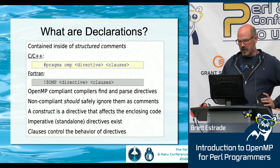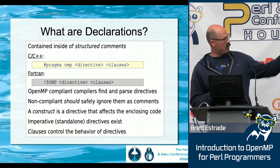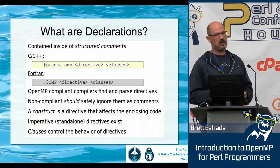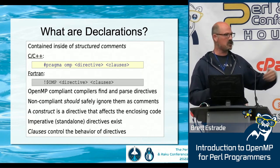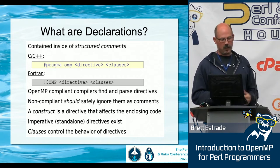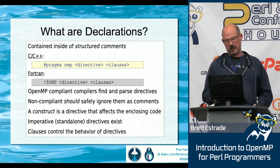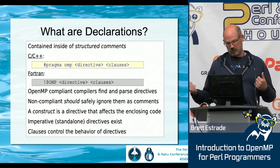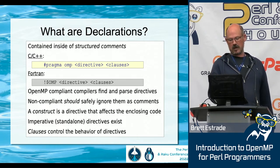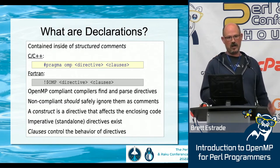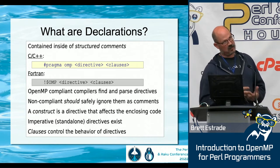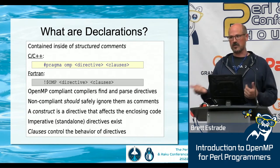A pragma is a declaration. For C and C++, it's #pragma omp [stuff]. I think #pragma is part of the C specification — that's why you have #pragma omp instead of just #omp. For Fortran, it's an exclamation point, then $omp, then stuff. That special combination of exclamation point, dollar sign, and OMP is a Fortran comment construct — it's how the Fortran compiler recognizes and differentiates an OpenMP declaration from just a random comment.